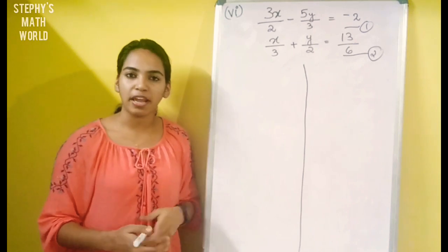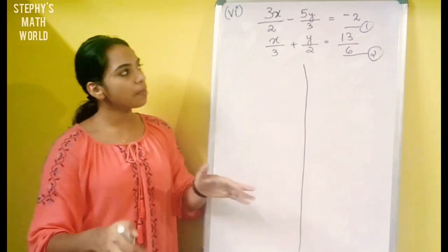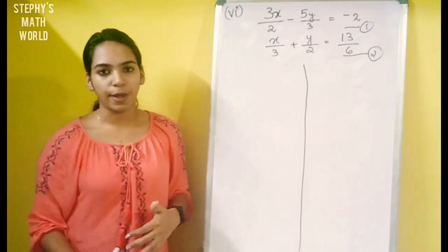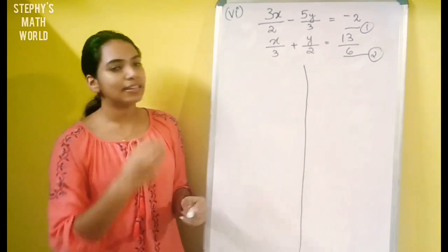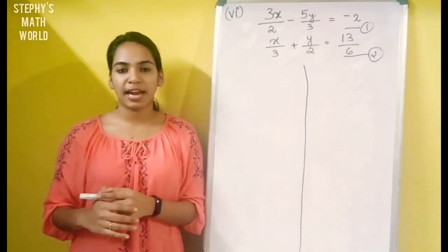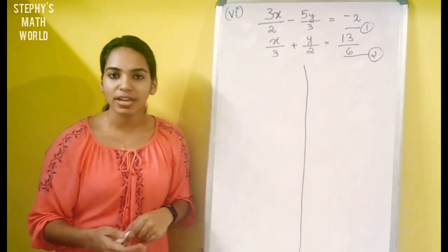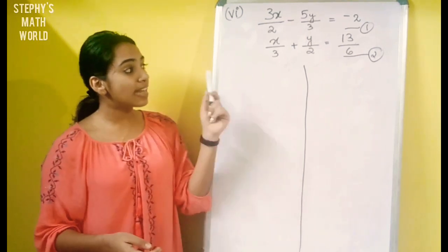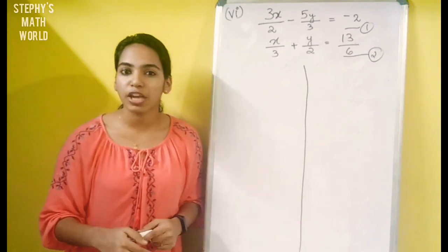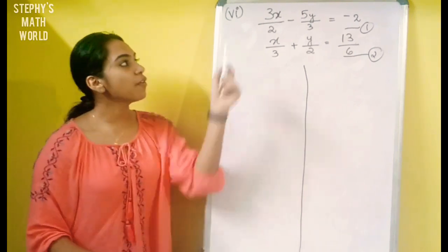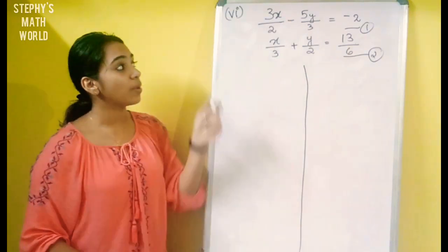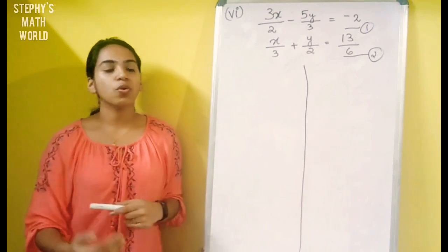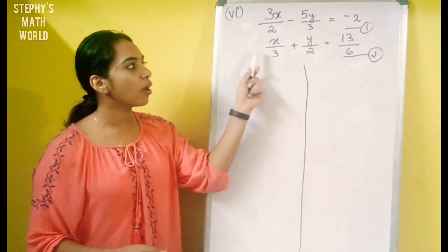We will solve the fraction. We will solve the equation in the first equation and the y value in the second equation. In this question, I will solve using the second equation, because in the first equation the coefficient of x is 3 by 2, and in the second equation it is 1 by 3. So we will do it a little simpler by solving the question using the second equation.